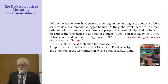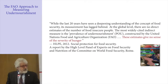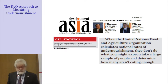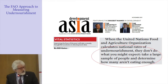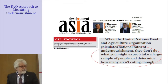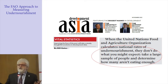But there are other criticisms, raised at quite a high level, with which I personally have a hard time relating to. For example, a quote from India Development by Bill Gates: he said that we don't understand why FAO doesn't do what you might expect — take a large sample of people and determine how many are not eating enough. So why use a statistical inferential model, a probabilistic parametric approach?